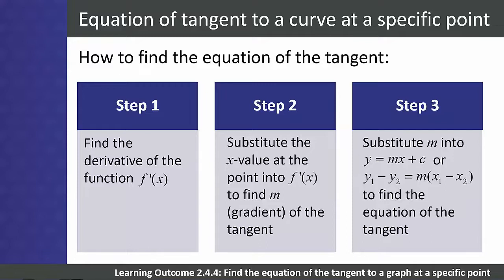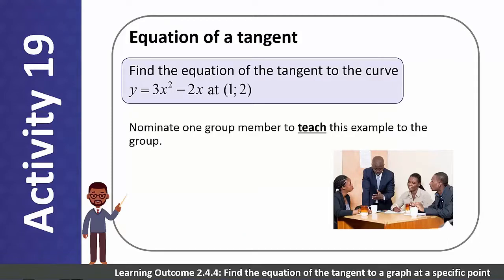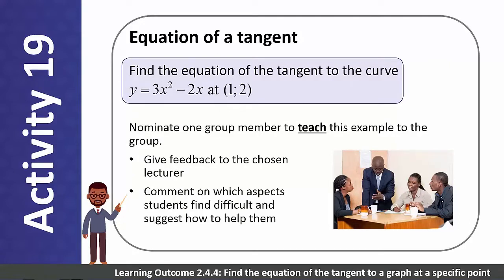Please work in small groups to do the activity on finding the equation of a tangent to a curve. Nominate one group member to teach the example to the group, give feedback to the lecturer, comment on which aspects students find difficult, and suggest how to help them.